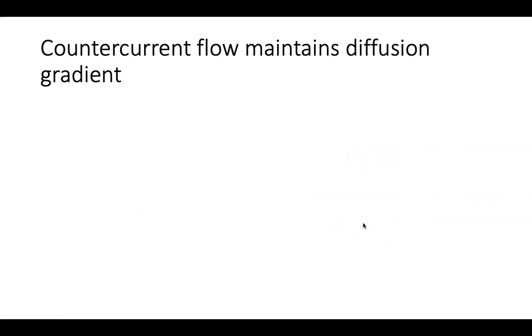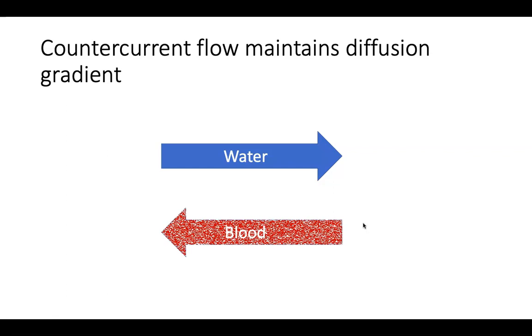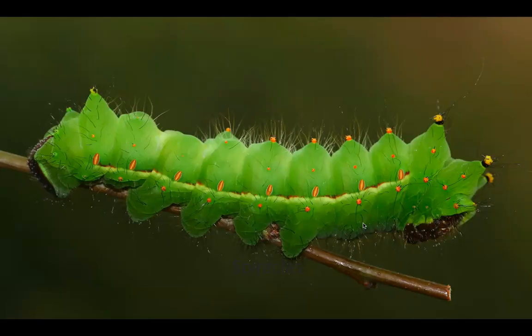Now, fish need to have countercurrent flow to help maintain that diffusion gradient. So similar to humans where we have the capillaries pushing the blood across, so it's always withdrawing the oxygen in and the carbon dioxide out, fish have a system where the water is going to flow across their gills in one direction and the blood is going to flow through their gills in the opposite direction. So it's similar to what we have in humans, but we call it countercurrent because it is water moving one way and blood moving the other way. But that movement, that countercurrent maintains that diffusion gradient.